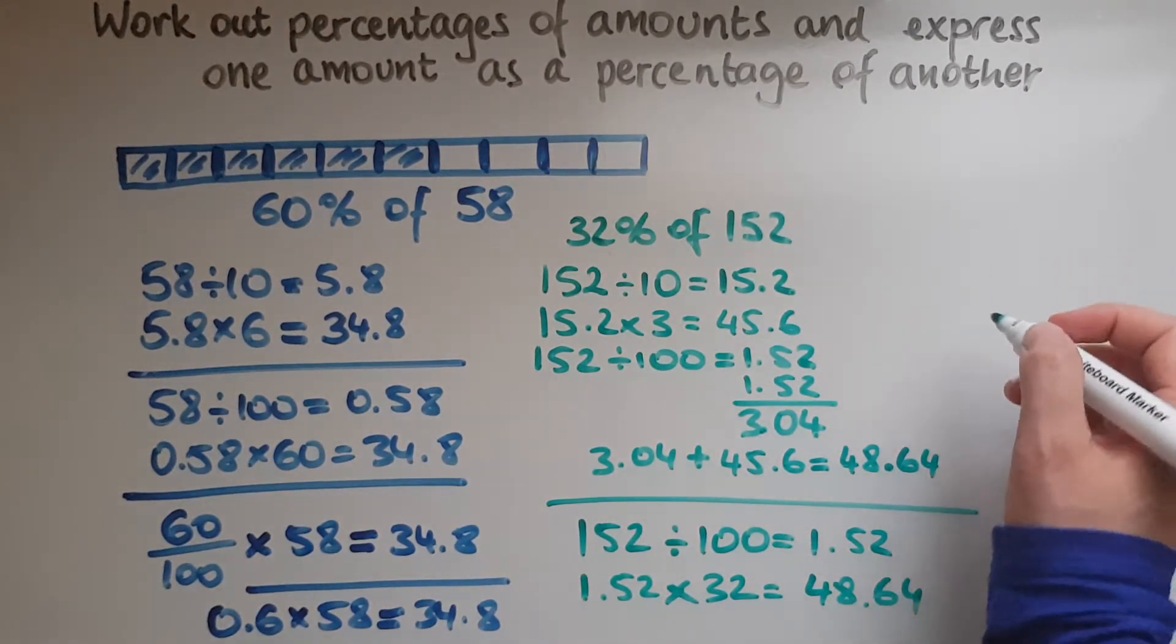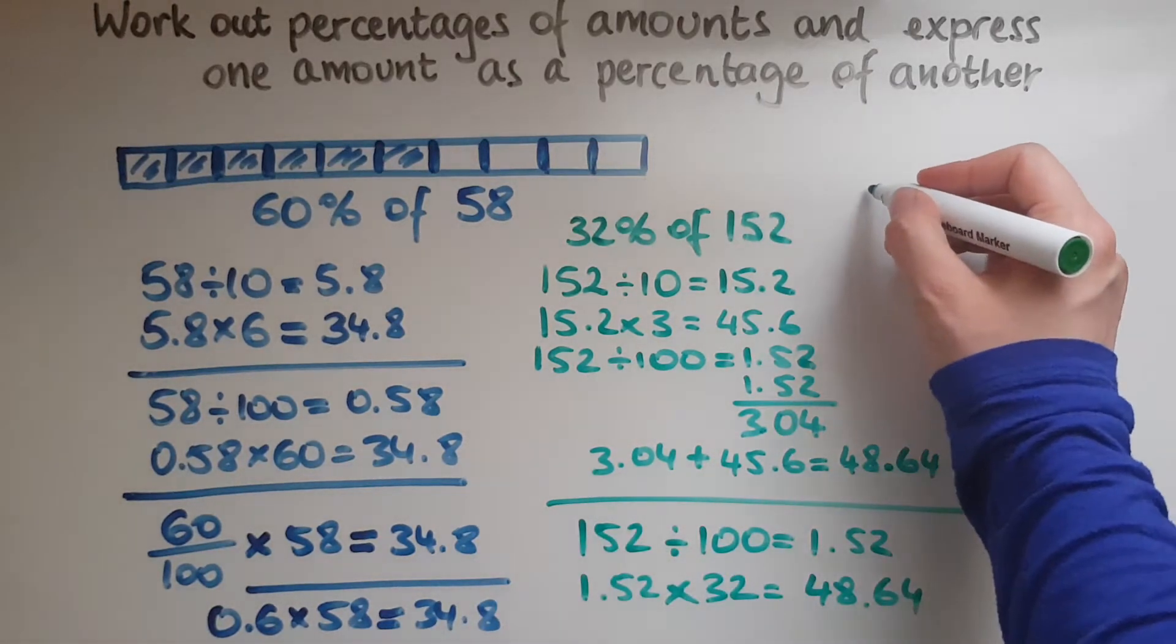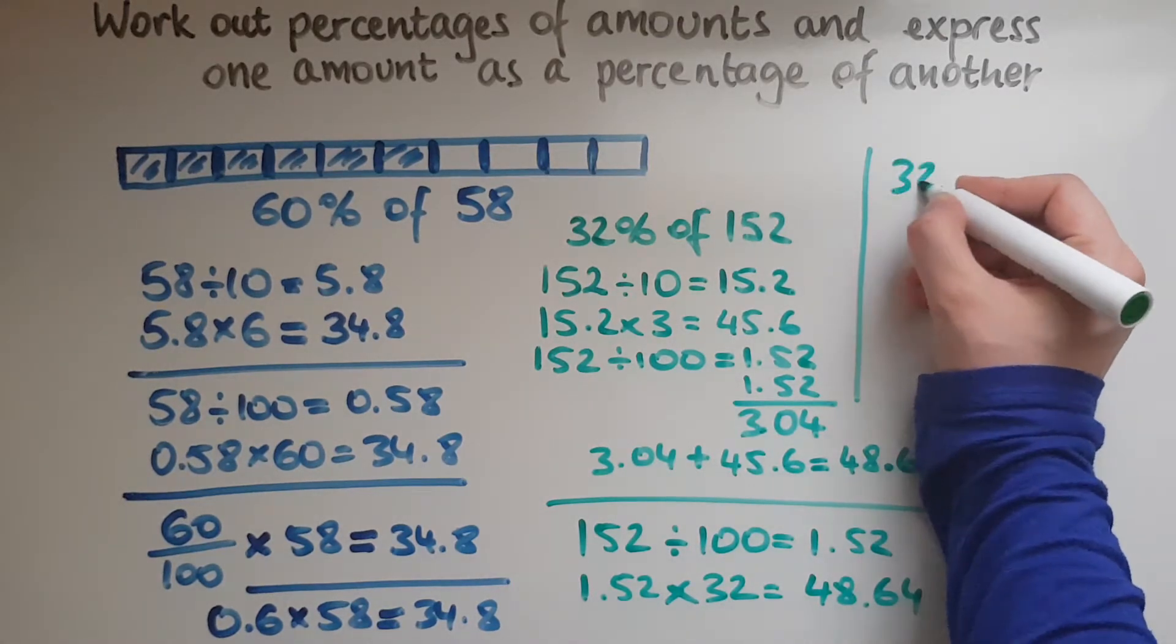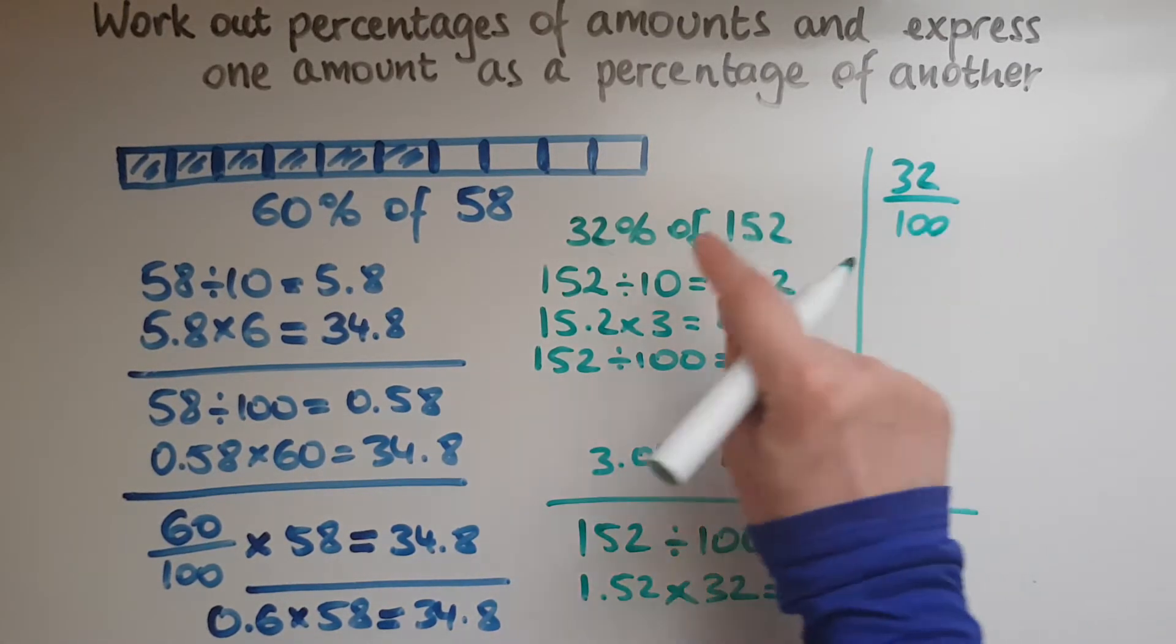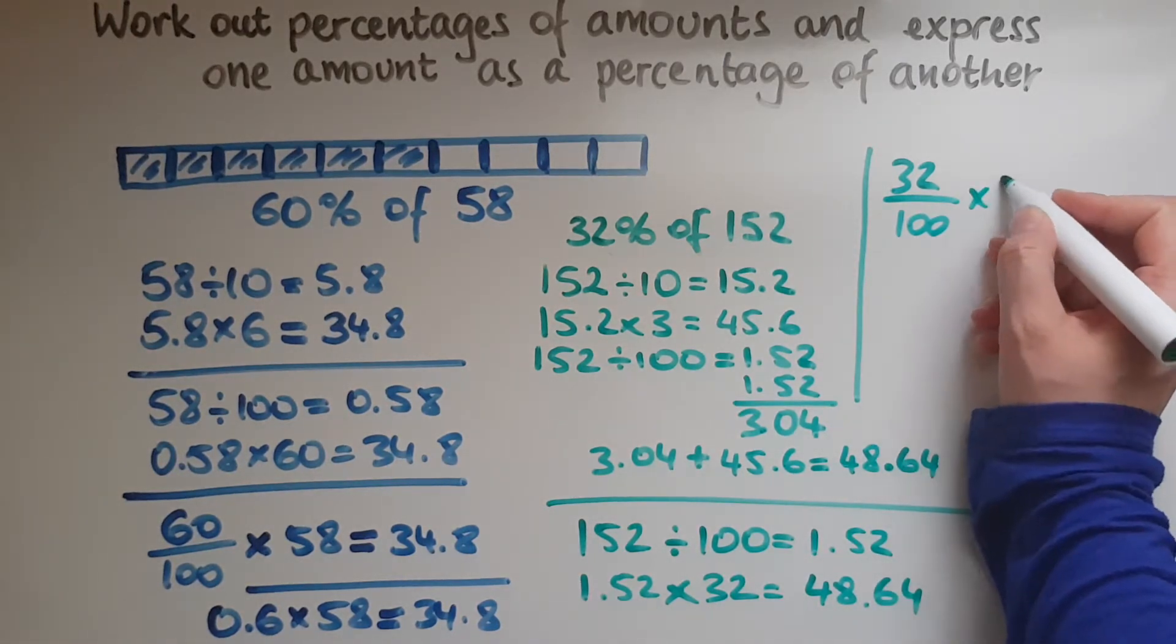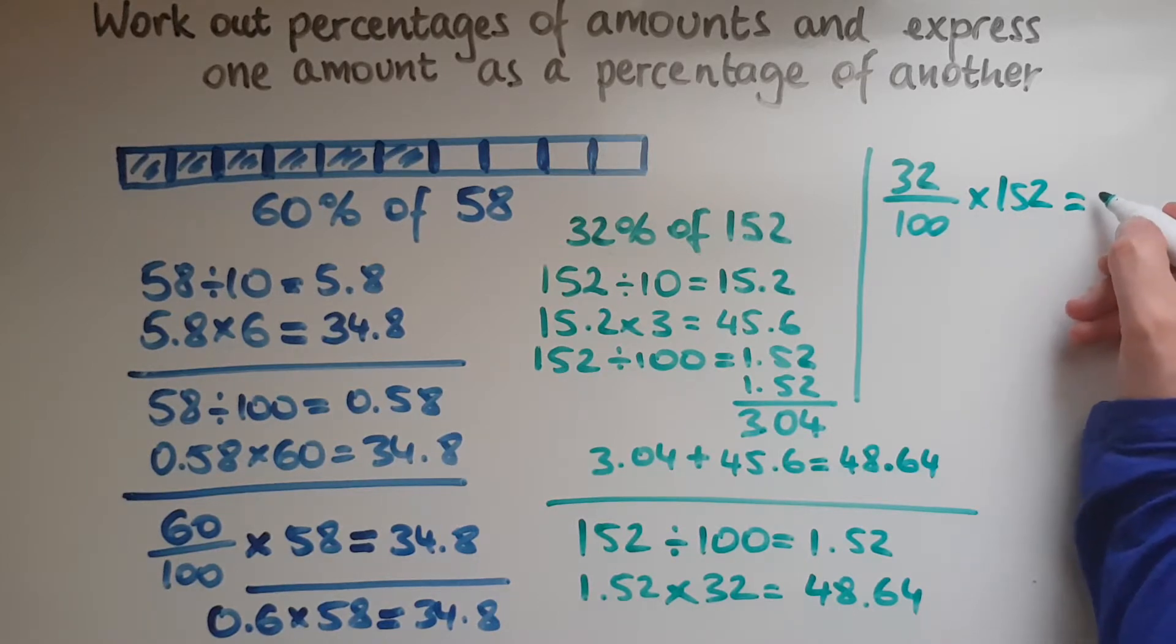So we've got the second method. Now we'll try this one here. So we said we want 32%. So that's 32 out of 100 of 152 times 152.